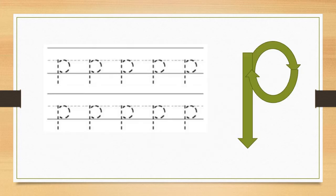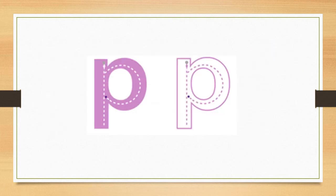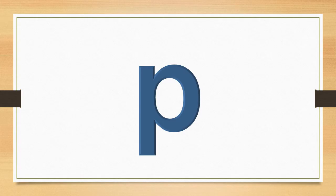Let's practice writing the letter P. Draw a line down and then from the top make a circle to the right that ends in the middle, just like the arrows. Now it is your turn. Draw the letter P on the table, just like you see here. Try on your own first and then your teacher can help you.